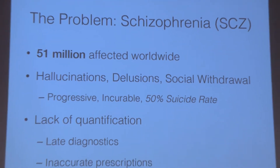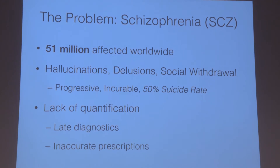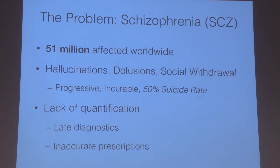Schizophrenia is a mental disorder that affects an estimated 51 million people worldwide. The condition causes symptoms such as hallucinations, delusions, and social withdrawal. Schizophrenia is incurable — it's a progressive condition in which 50% of patients commit suicide. The biggest problem with schizophrenia is that it lacks quantification. Doctors utilize qualitative metrics and questionnaires to grade severity, leading to late diagnostics and inaccurate prescriptions of the right treatment to suppress progression.